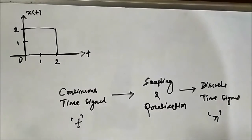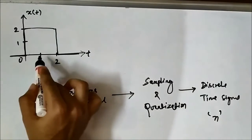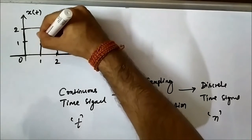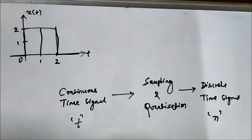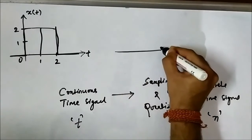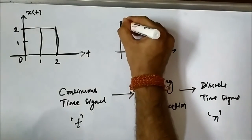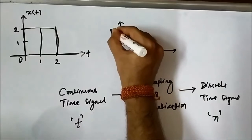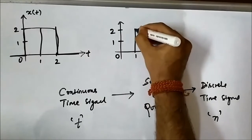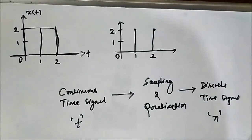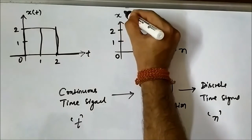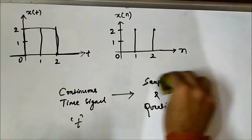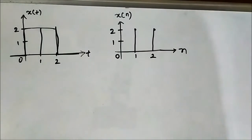In the continuous time domain we use t; in the discrete time domain we use n. If we take samples of these signals at distinct equidistant points — let's say at n=1 and n=2 — then the discrete time domain signal will look like this. This is the discrete time domain signal with axis n and x[n].